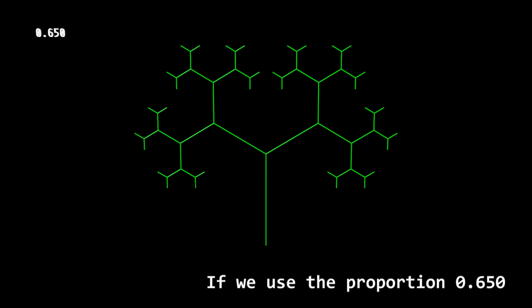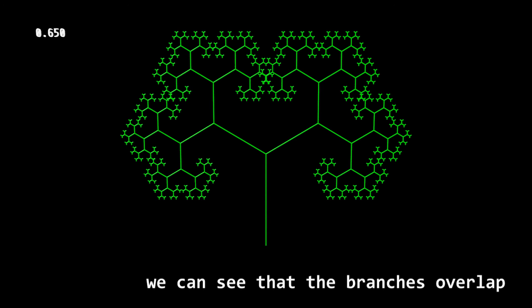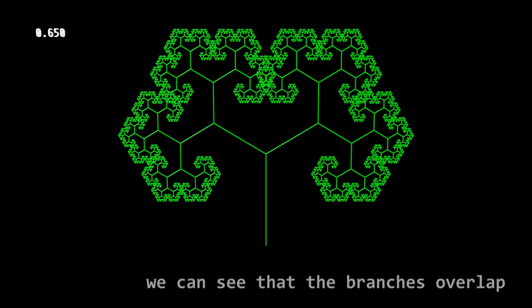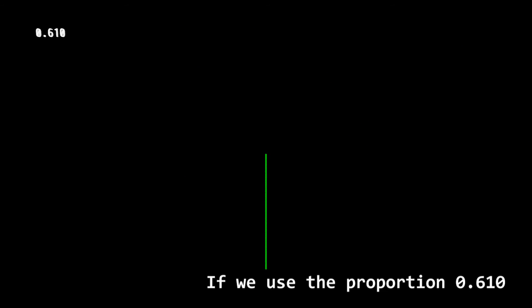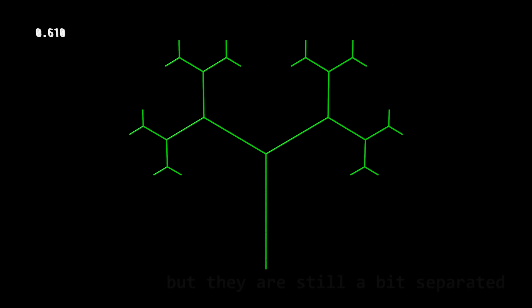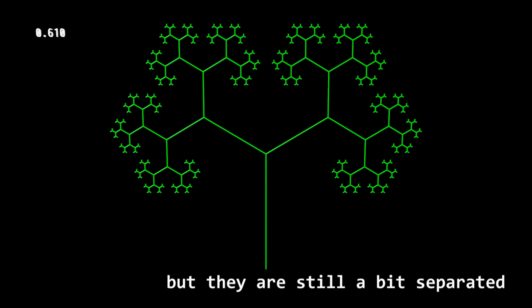If we use the proportion 0.65, we can see that the branches overlap. If we use the proportion 0.61, the branches get very close, but they are still a bit separated.